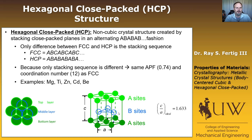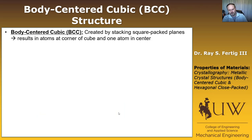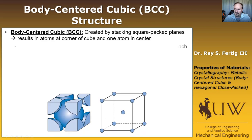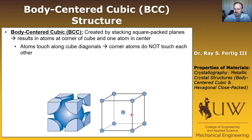Let's move on and talk about the body-centered cubic structure. In a body-centered cubic, if you remember, we talked about FCC being stacking of closed-packed planes. You could think of BCC, or body-centered cubic, as the stacking of square-packed planes. This results in atoms at the corners of the cube and one atom in the center. I'm showing you both the hard sphere model and the reduced sphere model. Unlike in the FCC case, the corner atoms don't touch each other — they only touch across the diagonal through the center atom.